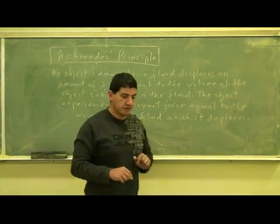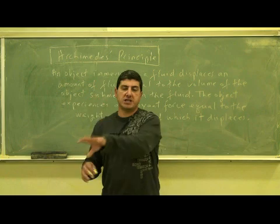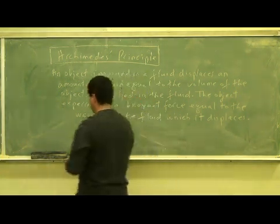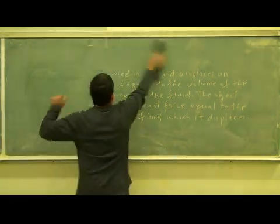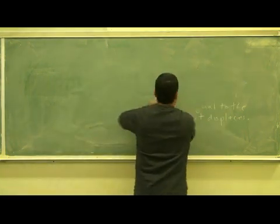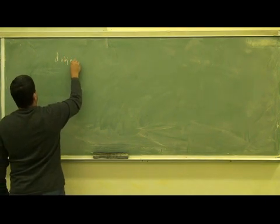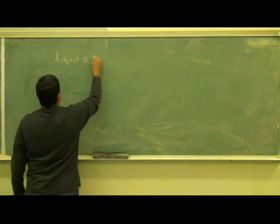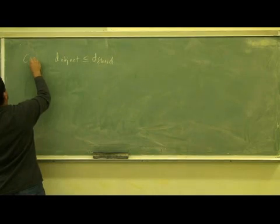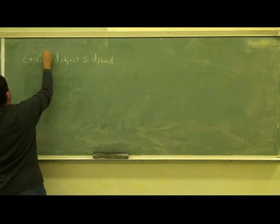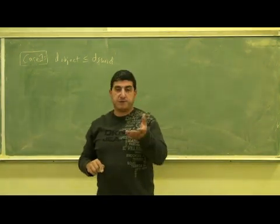We can divide this into two kinds of cases. Case one is where the object is less dense than or equal to the density of the fluid in which it is immersed. Case two is if the object is more dense than the fluid. In case one, if the density of the object is less than the density of the fluid, then the object will float on the fluid.